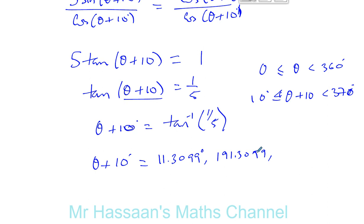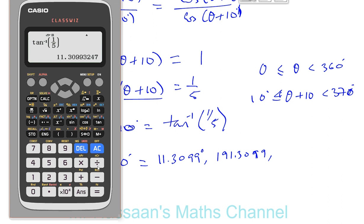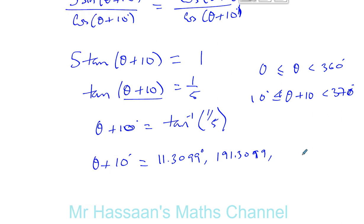If we go 180 more than that, let's see what happens. We're going to add 180 plus 180, so that's adding 360. That gives us 371.30. It's just outside of our range. We have to go up to 370. So that's just outside of our range. These are the only two solutions within our range.